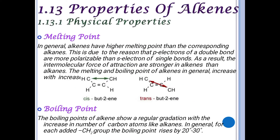Now we look at properties of alkenes. In general, alkenes have higher melting points than the corresponding alkanes because alkenes contain pi electrons from the double bond. The pi electrons of a double bond are more polarizable than the sigma electrons of single bonds, so intermolecular forces of attraction are stronger in alkenes. Melting and boiling points generally increase with increasing molecular size.